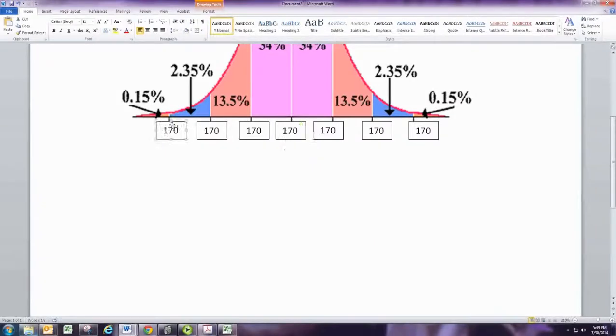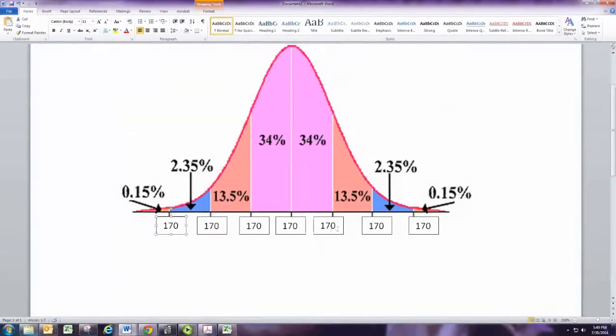And then we just change the numbers. So we're going to go to the right from 170. And adding the standard deviation is 6.28, we'd get 176.28.